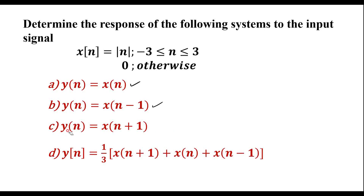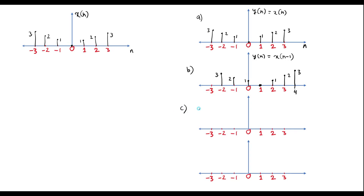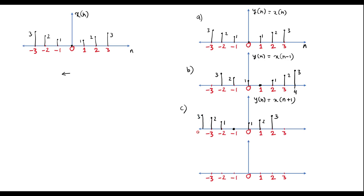Part (c): y[n] = x[n+1]. Here x[n+1] is obtained by shifting x[n] towards the left by 1 unit, so it starts at n=-4 and ends at n=2. At n=2, value is 3; shifting left: values are 3, 2, 1, 0, then 1, 2, 3 at n=-4. This is y[n] = x[n+1].